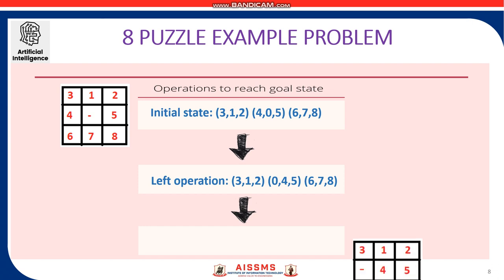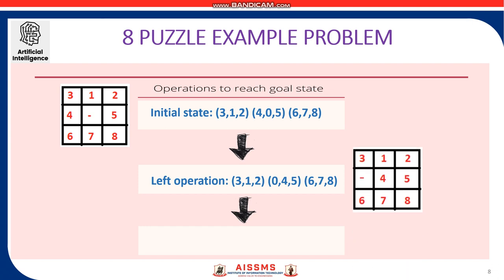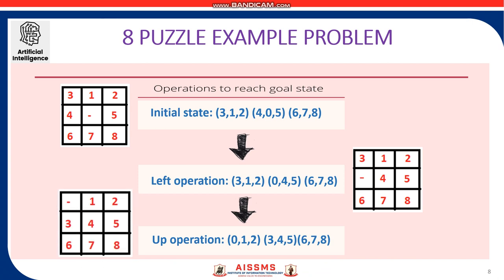Now, by moving the blank space up, we get the states as 0, 1, 2, 3, 4, 5, 6, 7, 8 which is our goal state. So, the path cost involved here is 2 for these two operations.